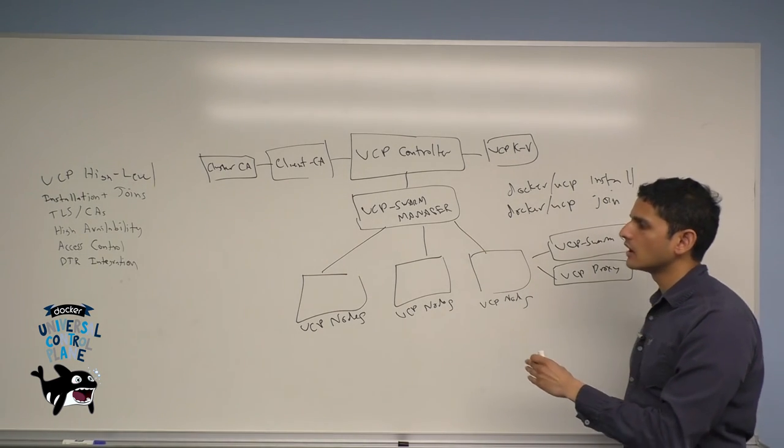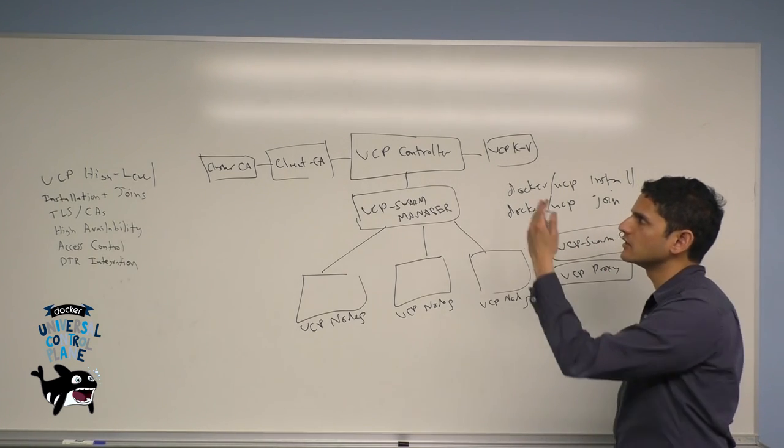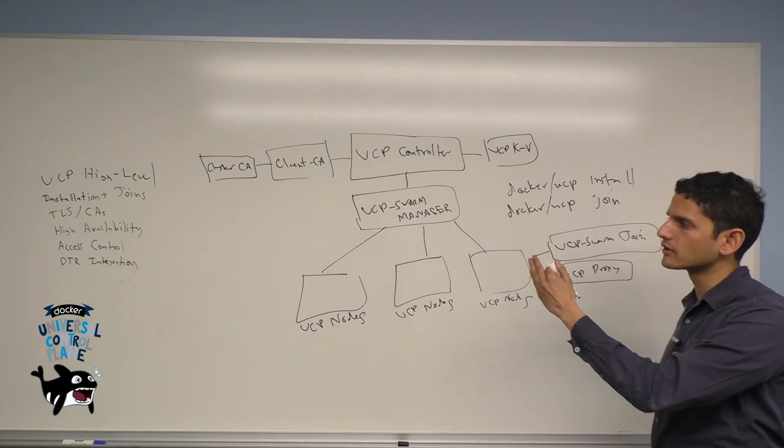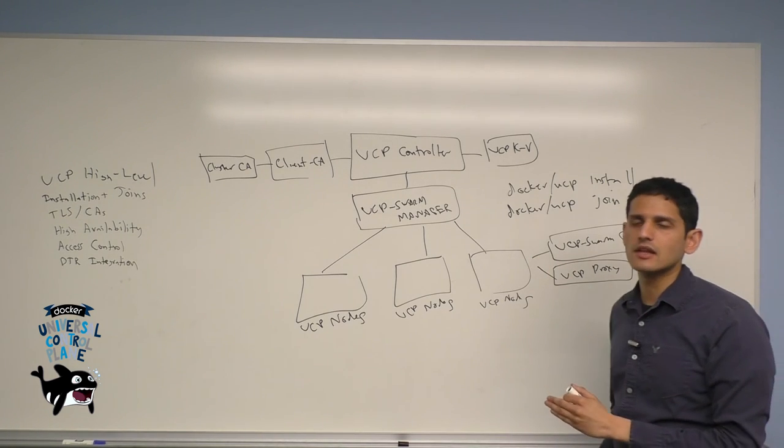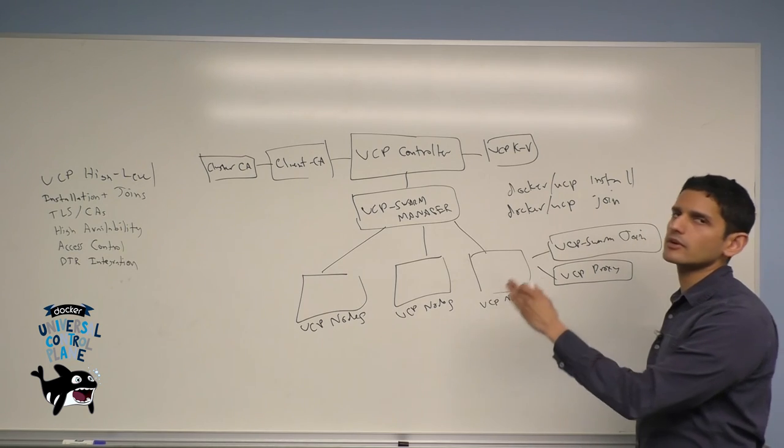As a part of this process, the UCP tool will ask you for the IP address of the swarm manager and main primary controller. So you provide it with that key level of access, and that allows the UCP node to stand up these containers and join it back to the cluster.